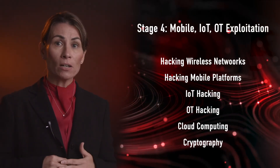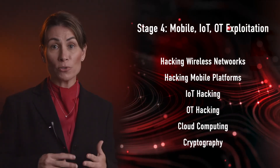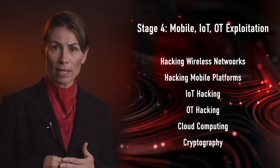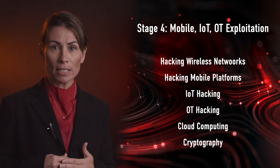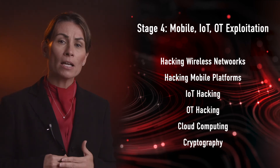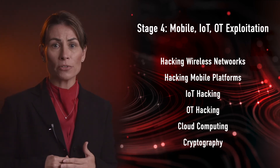Stage 4, mobile, IoT, and OT exploitation, includes hacking wireless networks, hacking mobile platforms, IoT hacking, OT hacking, cloud computing, and cryptography. When an attacker hacks into a network through these various exploitation tactics, their objective is to maintain access for future attacks, which leads to Step 5 — covering the tracks. The exploitation can prevent the system from being owned by other attackers by securing exclusive access with backdoors, rootkits, or Trojans.